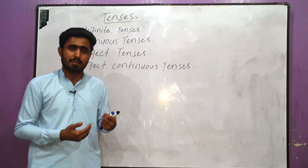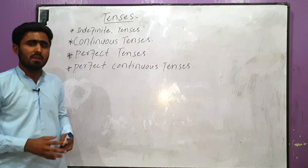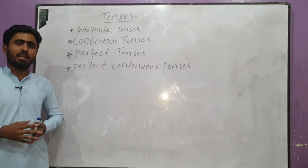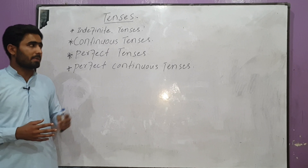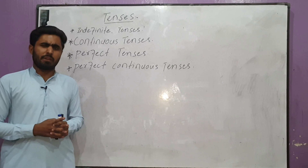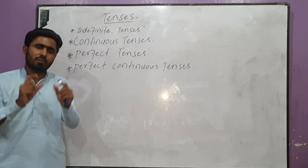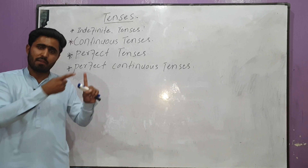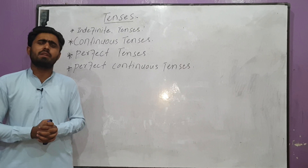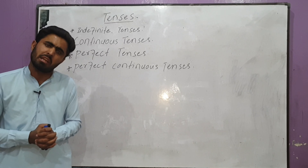First, we talk about tenses. The first three tenses are called indefinite tenses. We start with indefinite tenses. The first three tenses are called indefinite — present indefinite tense, past indefinite tense, future indefinite tense. We say 'indefinite' because there is no definiteness in them; they are indefinite.